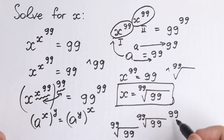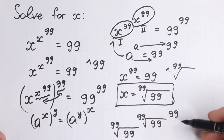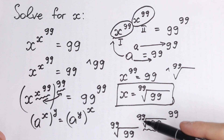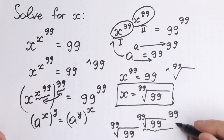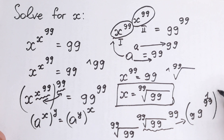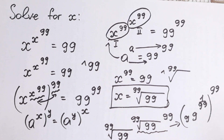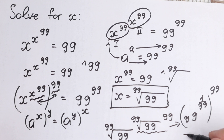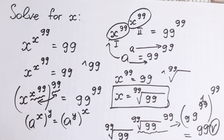Let's simplify. The 99th root of 99 is 99 to the power 1 over 99. Raised to the power 99, this gives us 99. Then 99 to the power 99, raised to the power 99, gives us 99. So our root is verified. If you have any questions, write them in the comments. Thank you so much for watching and subscribing — I really appreciate it. See you in the next videos.